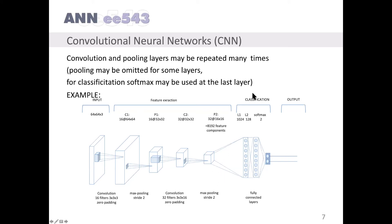For classification, fully connected layers are applied. At the end, for better classification, softmax may be used. In this example, we have two classes at the output, so a layer having two softmax elements is used. All these elements — convolution, pooling, and softmax — will be explained later.